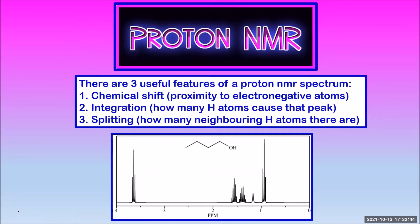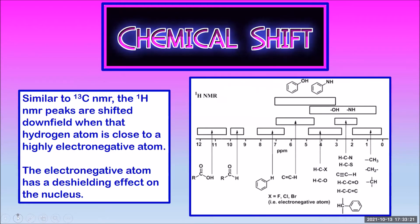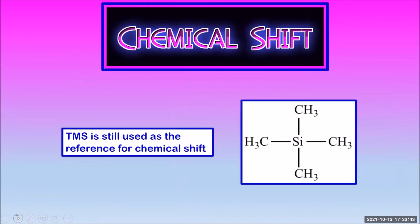We're going to look at hydrogen-1 NMR, or proton NMR, now. The proton NMR spectrum is incredibly useful for determining the structure of the hydrocarbon part of an organic molecule. There are three main sources of information: chemical shift, which is the proximity to electronegative atoms; integration, which tells us how many hydrogen atoms are causing that peak; and splitting, which tells us how many neighboring hydrogen atoms there are. Chemical shift works exactly the same way as in carbon-13 NMR — the closer a hydrogen atom is to a highly electronegative atom, the further downfield its peak will be. TMS is still used as a reference with a chemical shift of zero.